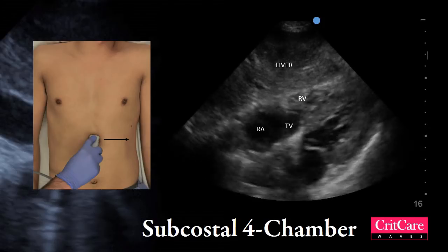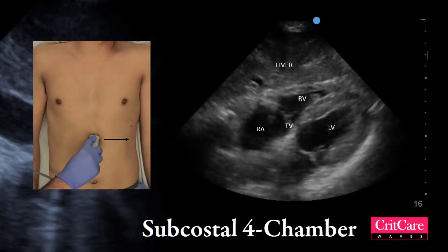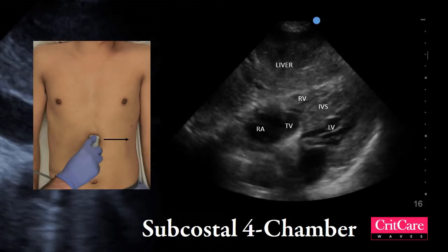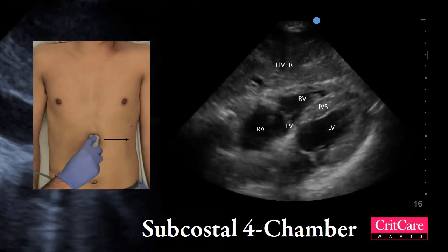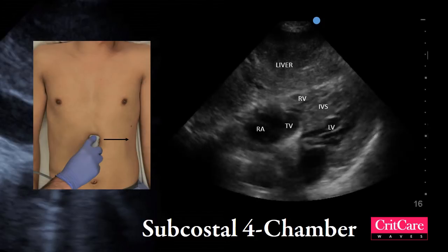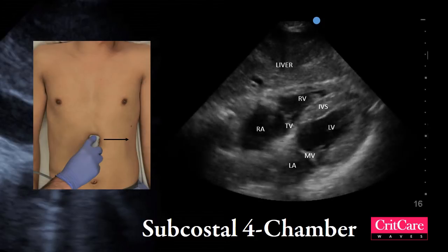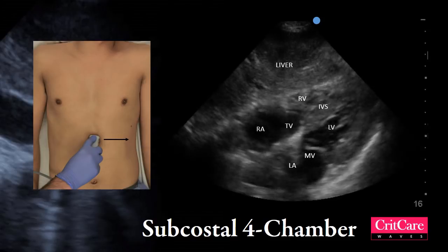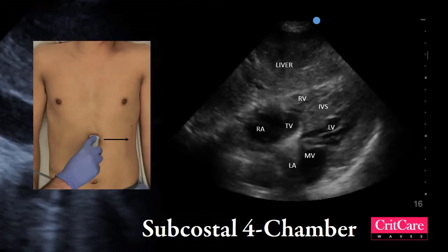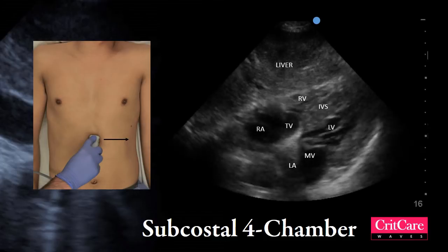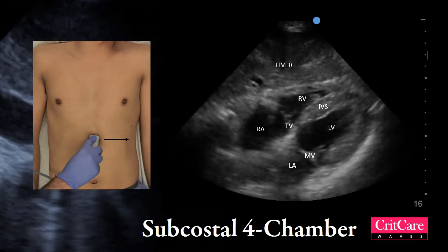The left ventricle is adjacent to the right ventricle with the interventricular septum in between. The left atrium is next to the right atrium. The mitral valve can be seen between the left atrium and ventricle. This is a good view to perform during a cardiac arrest, as it is not in the way of chest compressions.